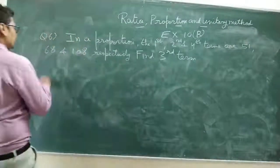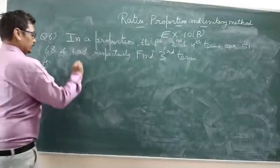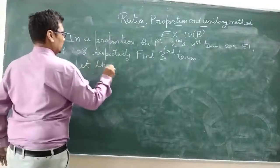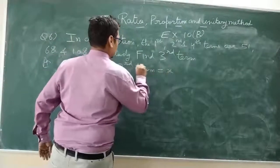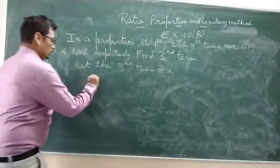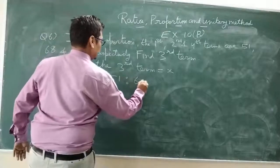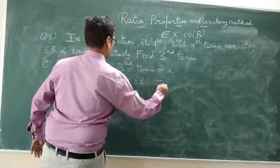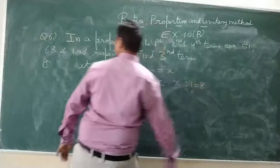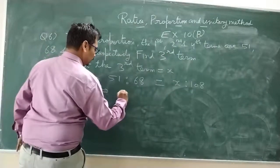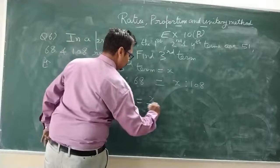In a proportion, the 1st, 2nd, and 4th terms are 51, 68, and 108 respectively. Find the 3rd term. Let the 3rd term be x. It can be written as 51 is to 68 equals x is to 108, or 51 upon 68 equals x upon 108.